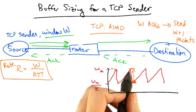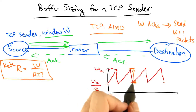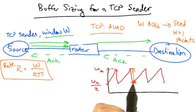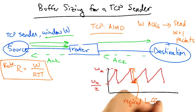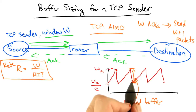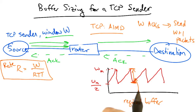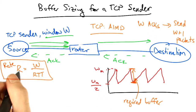So here, right at the point of a packet drop, this represents the maximum number of packets that can be in flight. So again, the required buffer is the maximum number of packets that can be in flight, or simply the height of this TCP sawtooth.